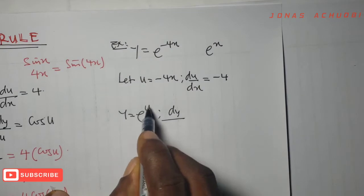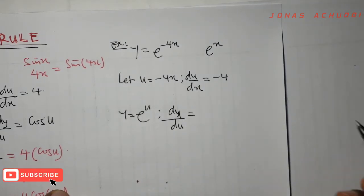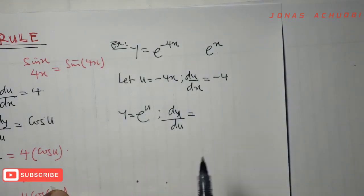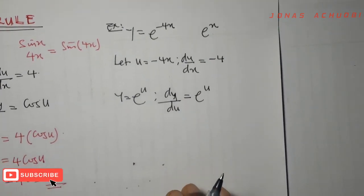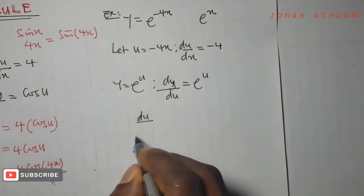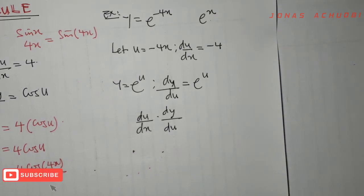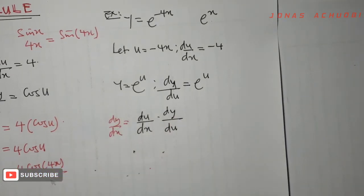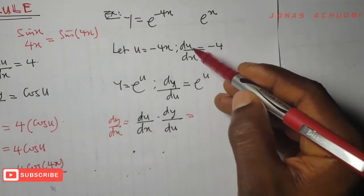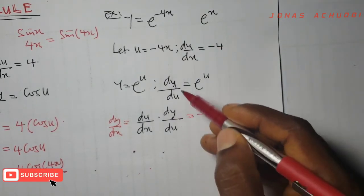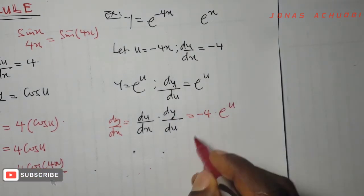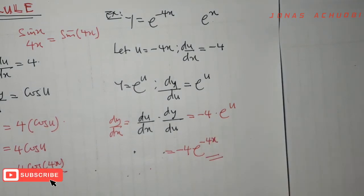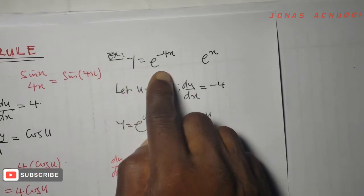We now differentiate y with respect to u. dy/du equals e^u. Recall that if y equals e^x, then dy/dx is simply e^x; so here, instead of x we have u, meaning dy/du is e^u. Once again, du/dx times dy/du gives dy/dx. du/dx is −4, and dy/du is e^u, so we have −4 e^u. Our u is negative 4x, so the derivative of y = e^(−4x) is −4 e^(−4x).